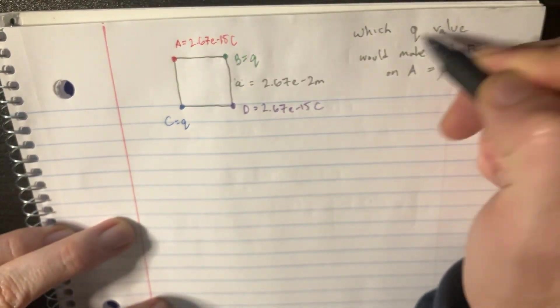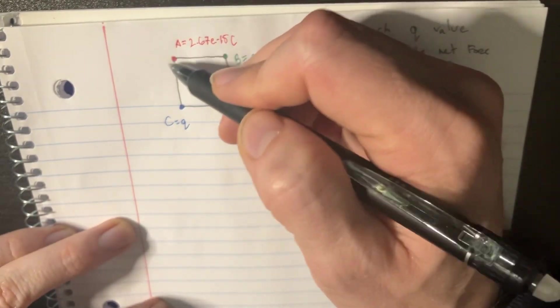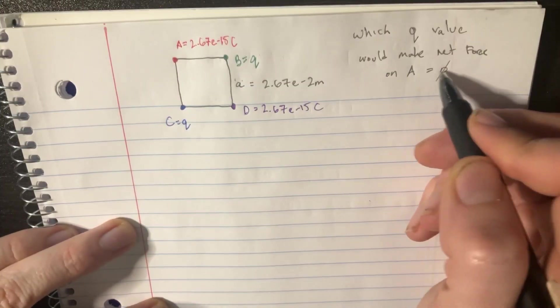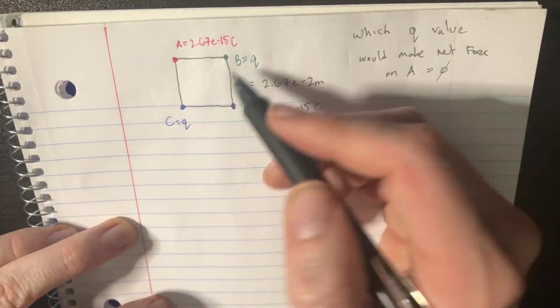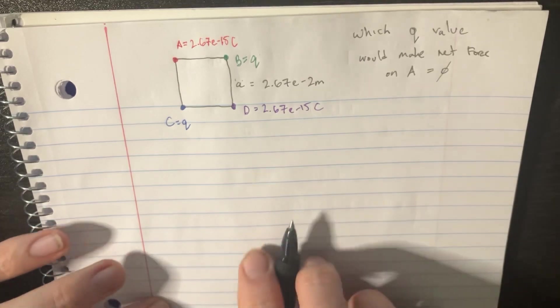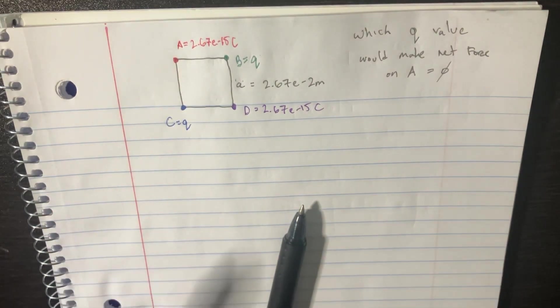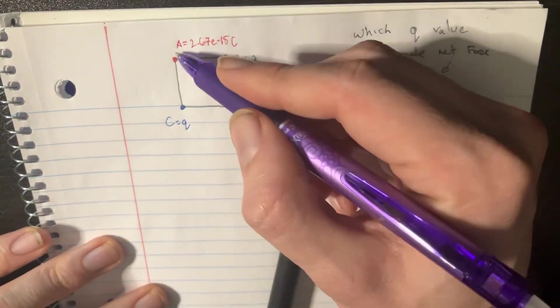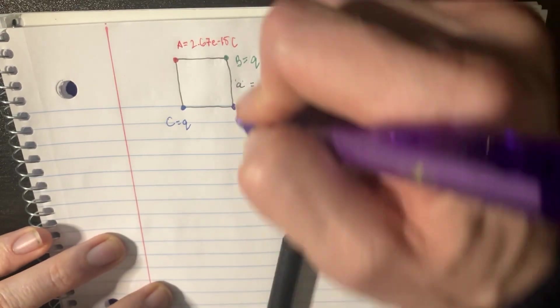So one thing we need to do is figure out the net force on particle A, and then set that equal to 0, and figure out what Q is. In order to do that, we should start drawing some force arrows, because we know that these two, since they have the same charge, they're going to repel.